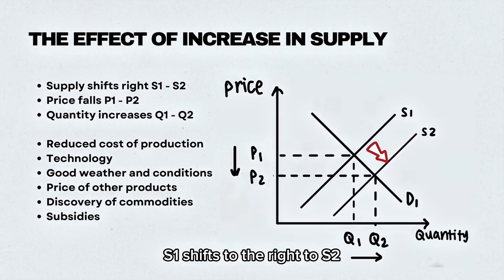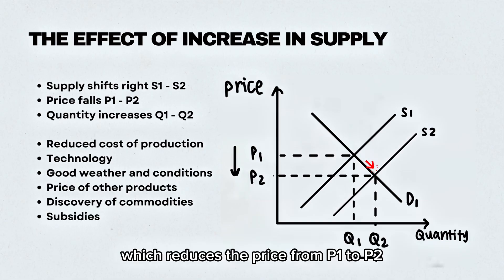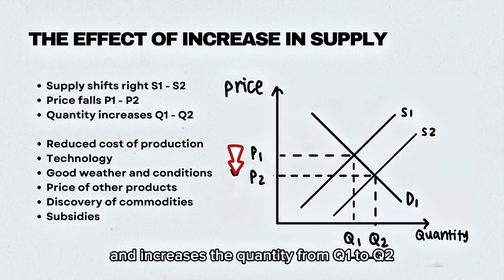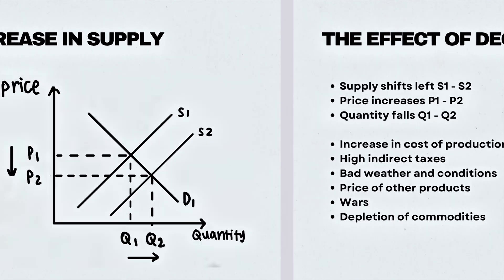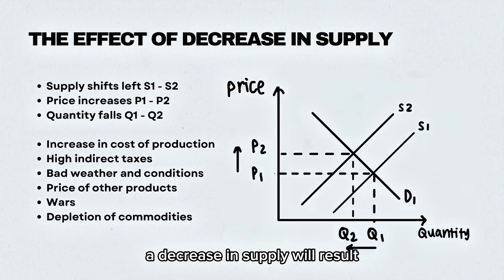In the case of increasing supply, S1 shifts to the right to S2, which is an extension of the demand curve. This reduces the price from P1 to P2 and increases the quantity from Q1 to Q2.